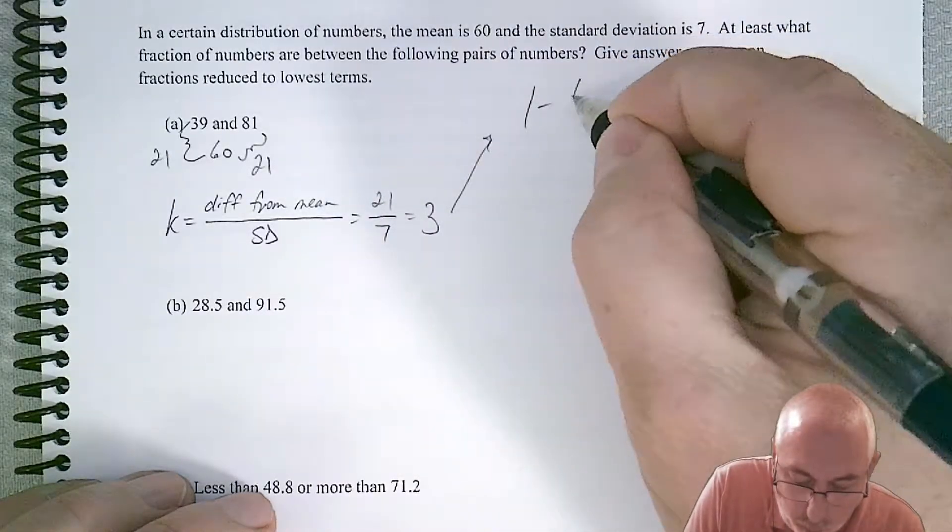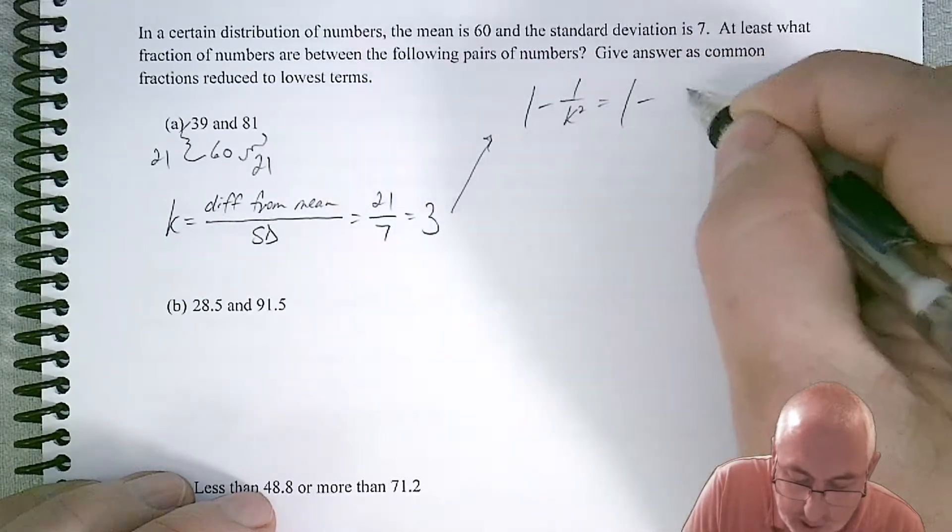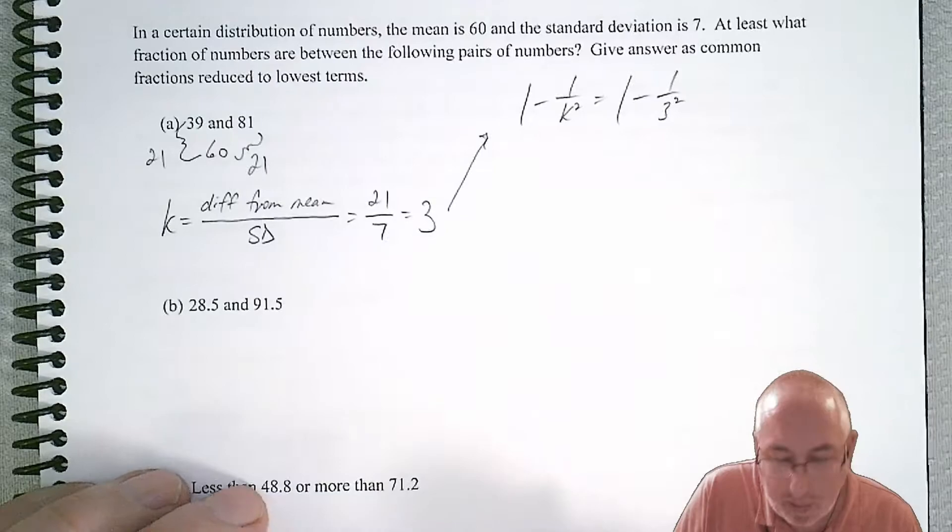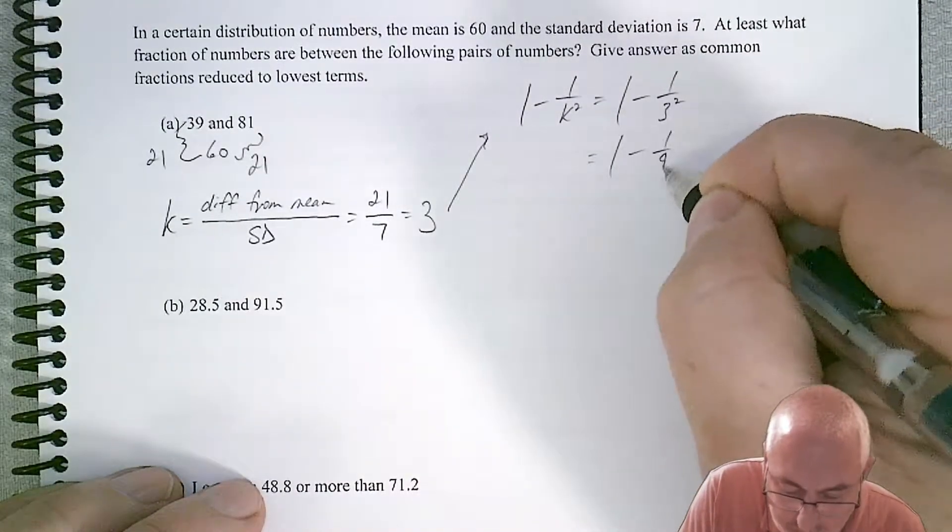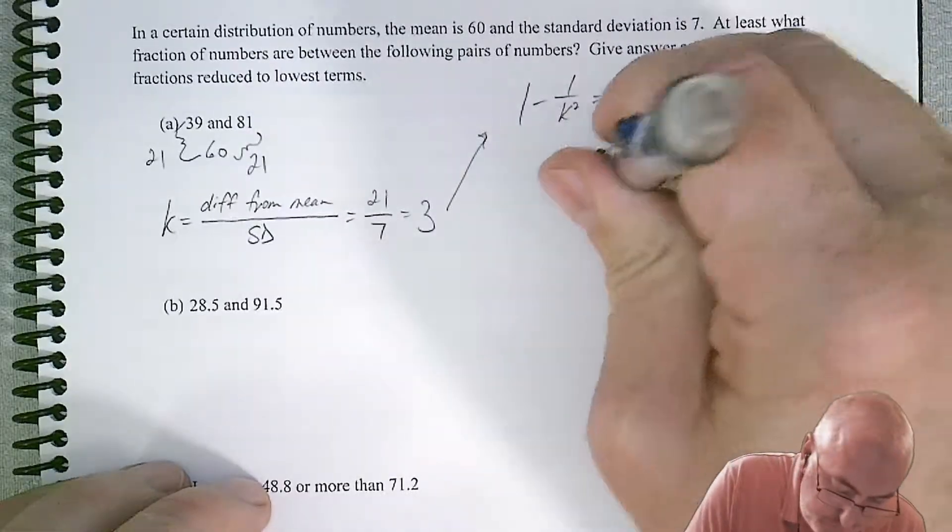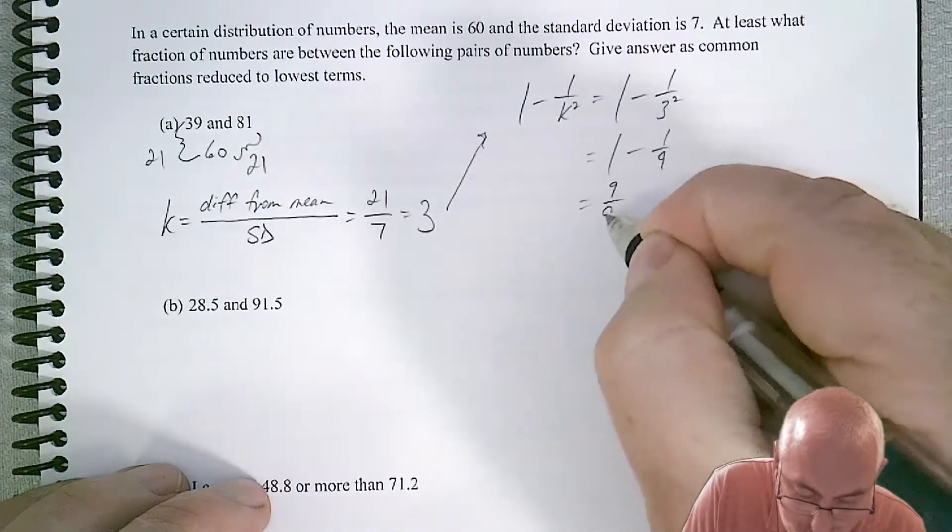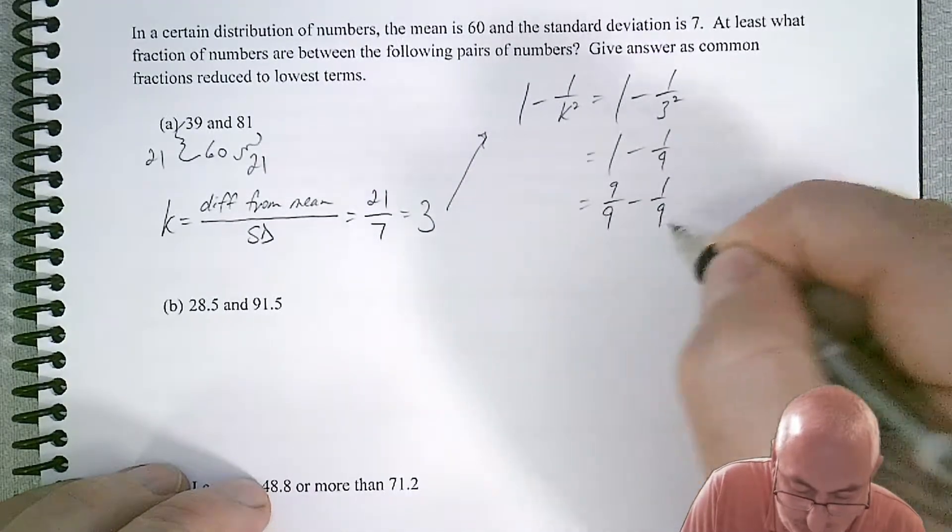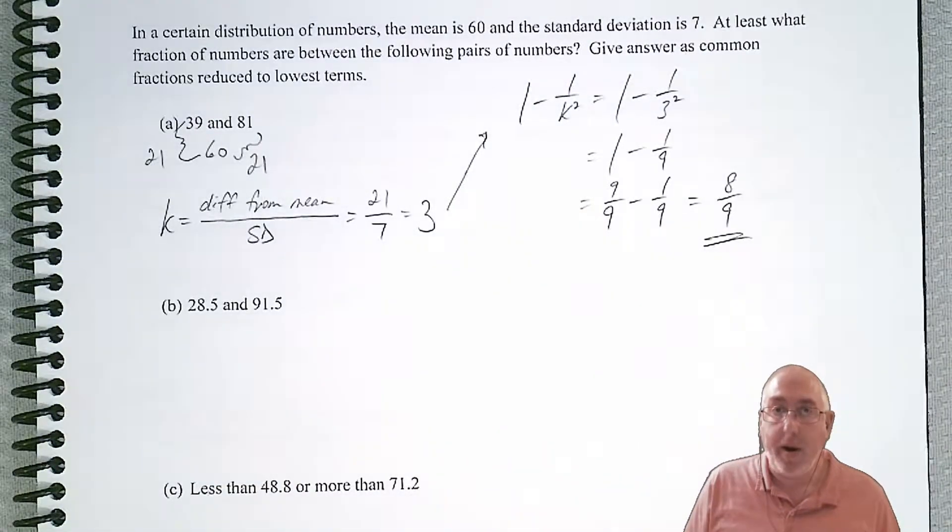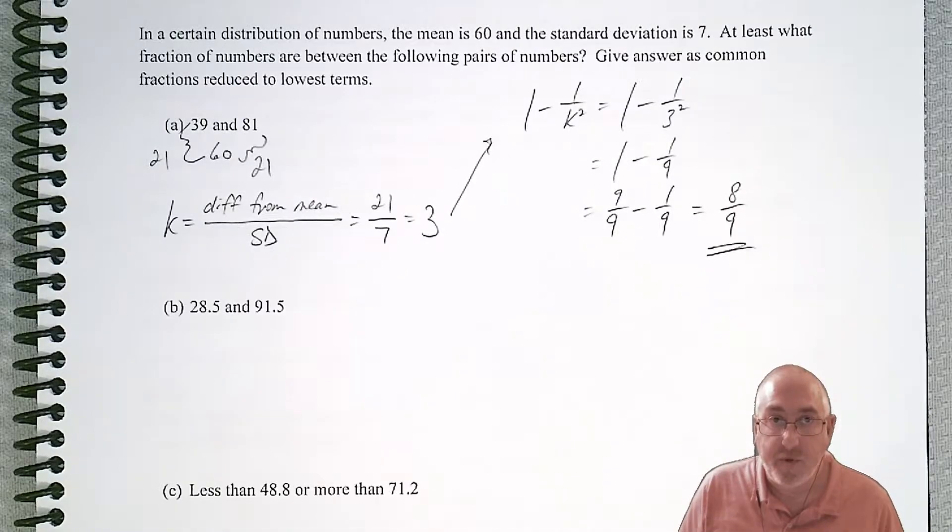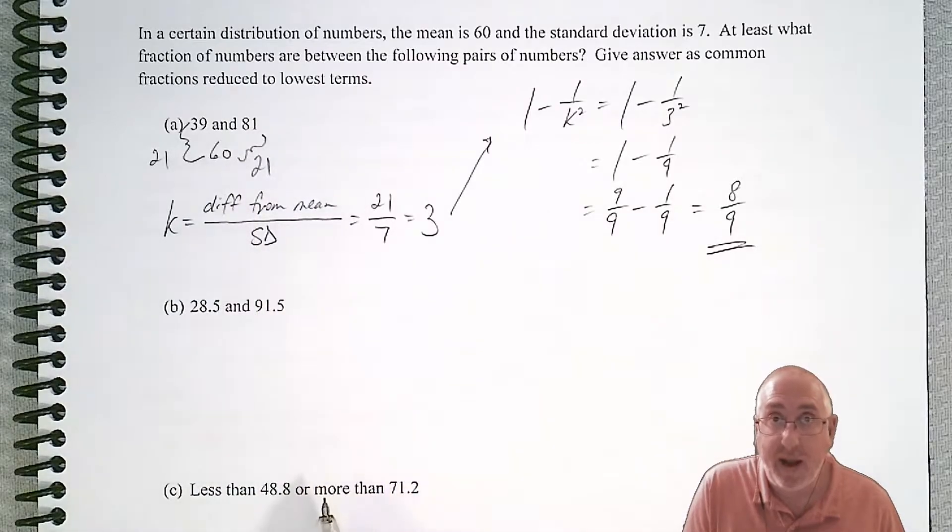So we got 1 minus 1 over k squared. So 1 minus 1 over 3 squared, which you probably remember from the previous video. So 1 minus 1 ninth, which is 9 over 9, so 8 ninths. So that would be our answer for this problem. So 8 out of 9 numbers should fall within that interval.